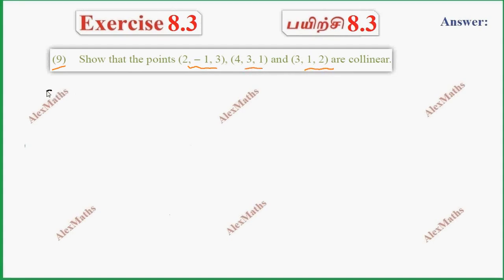If the first point is at the origin, with respect to origin, OA vector - how to do it. So OA vector is 2i minus j plus 3k. OB vector is 4i plus 3j plus k. And OC vector is 3i plus j plus 2k.